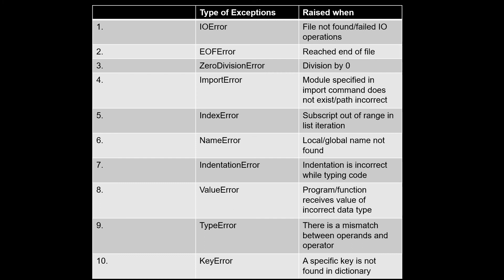NameError occurs when you try to print a variable like y that has no value assigned and does not exist in the namespace — Python cannot find any local or global name. IndentationError occurs when you do not follow the indentation rules, i.e., not shifting margins correctly during coding. ValueError occurs when you receive a value of an incorrect data type — for example, receiving a string when you need an integer for calculation. TypeError occurs when there is a mismatch between operand and operator, such as trying to add a string and an integer.